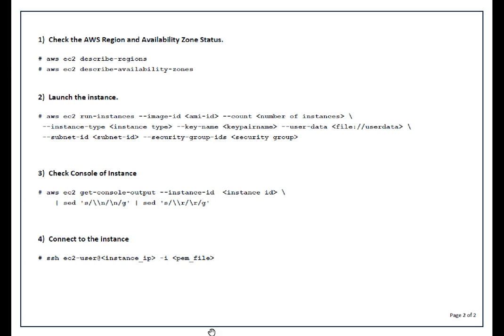To launch an instance you use the command: AWS EC2 run-instances, then --image-id with the AMI ID — AMI is basically Amazon Machine Image. Then --count for how many instances you want to launch, then --instance-type like T2 micro or M4 large. Then --key-name, which is your SSH key — in the graphical session we generated keys and I'm going to use my existing keys here. Then --user-data if you want some commands executed when the server boots for the first time.